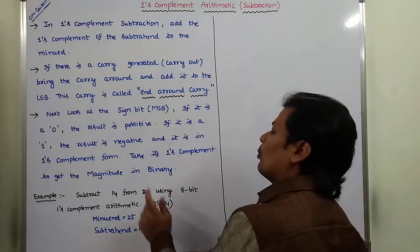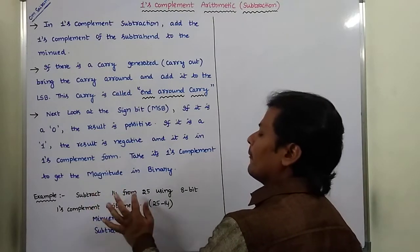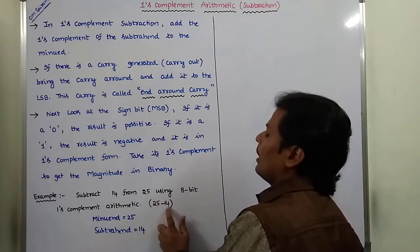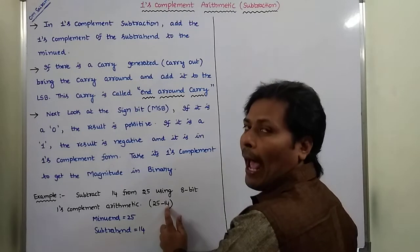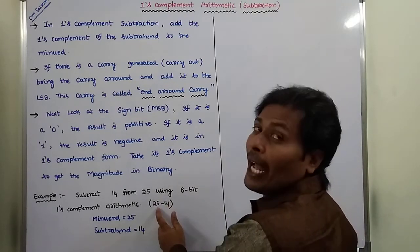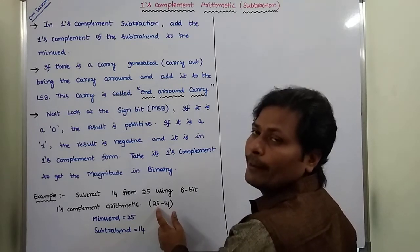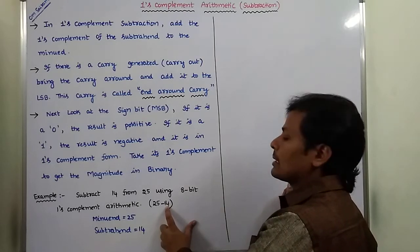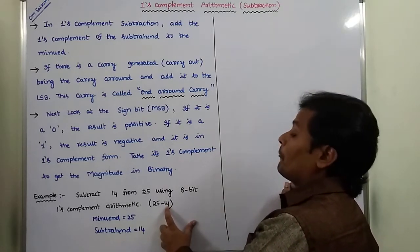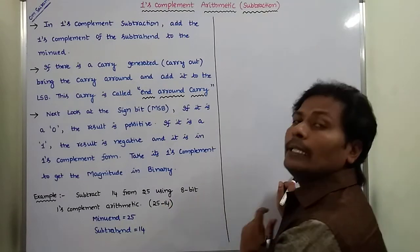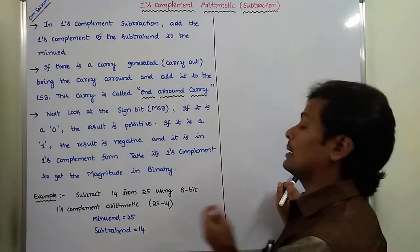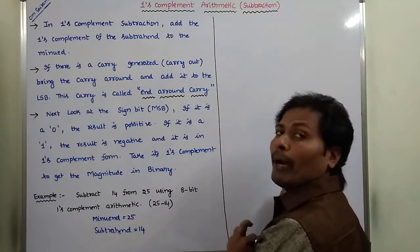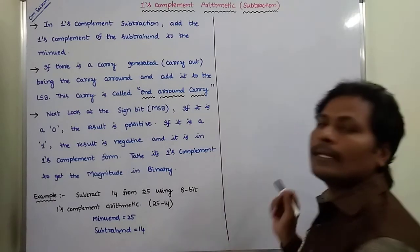We have to subtract 14 from 25, that means 25 minus 14. Here, 14 is called as Subtrahend and 25 is called as Minuend. The number which is subtracted is called as Subtrahend, and the number from which the Subtrahend is subtracted is called as Minuend. So 25 is the Minuend and 14 is the Subtrahend.